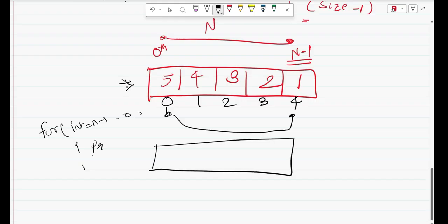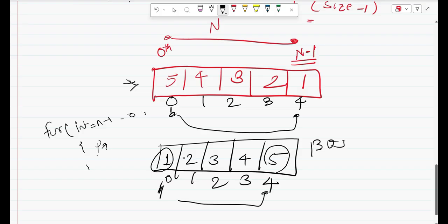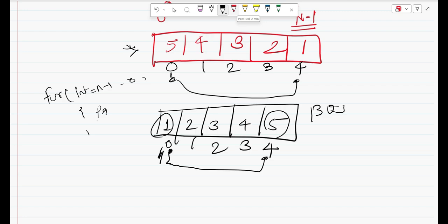Let's take a real-time example: a bus. There are five seats in the bus and the seat numbers are 0, 1, 2, 3, and 4. And the passengers are sitting like passenger 1, passenger 2, passenger 3, passenger 4, and passenger 5. Now if we want to reverse this position, the person on seat number 0 needs to swap with seat number 4. Similarly, the person on seat number 1 needs to swap with seat number 3. Similarly, so on.